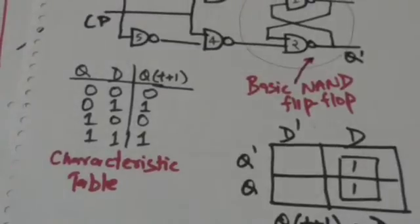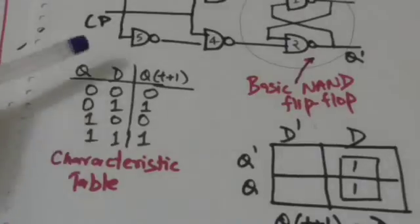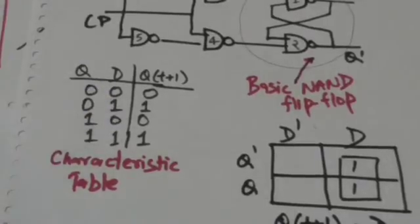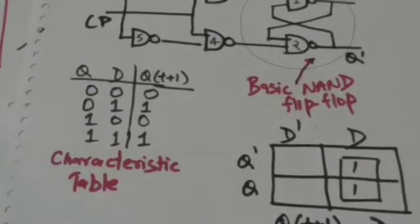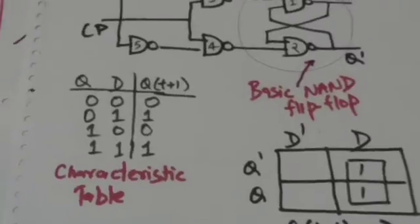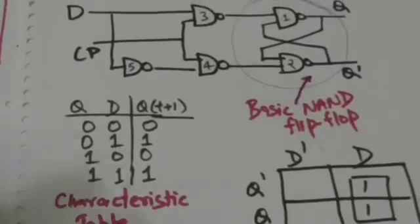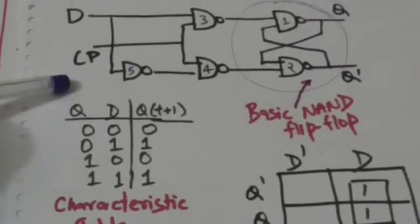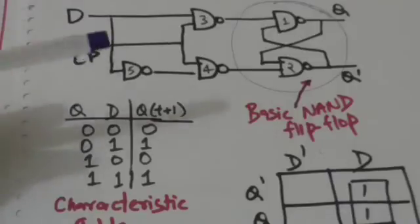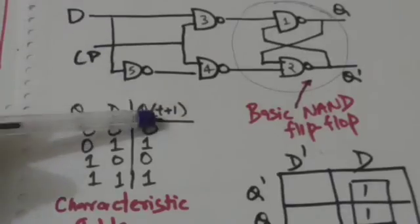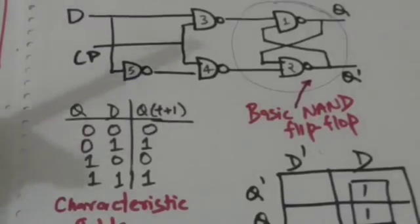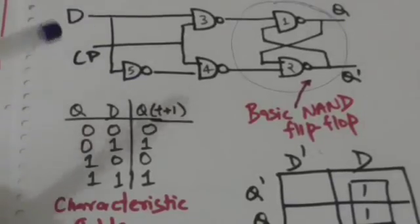This is the characteristic table of the D flip-flop. Here Q is the present state of the flip-flop and Qt+1 is the next state of the flip-flop.